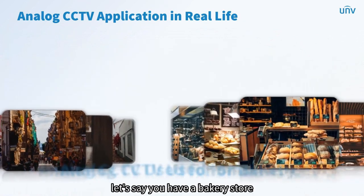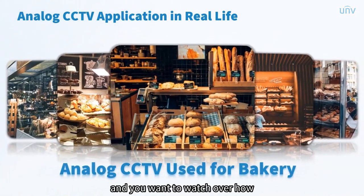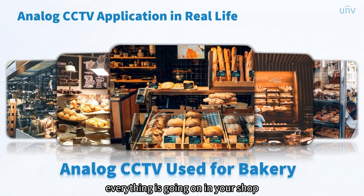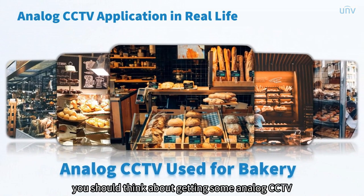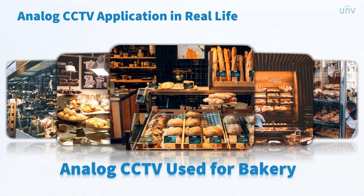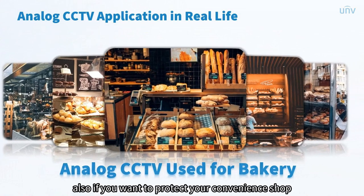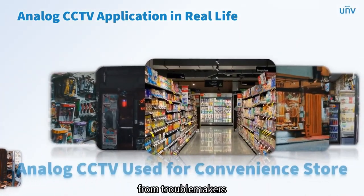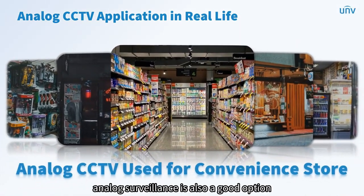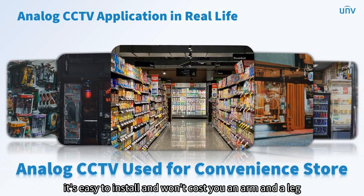For example, if you have a bakery store and want to watch over what's happening in your shop, analog CCTV won't cost you a lot but will be like a loyal and alert guard for your shop. Similarly, if you want to protect your convenience shop from troublemakers, analog surveillance is also a good option — it's easy to install and won't cost you an arm and a leg.